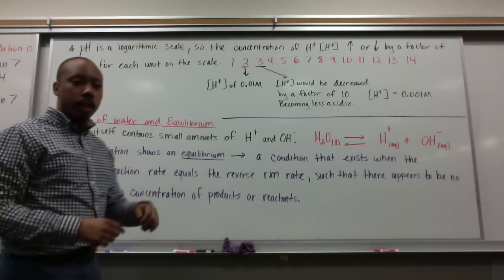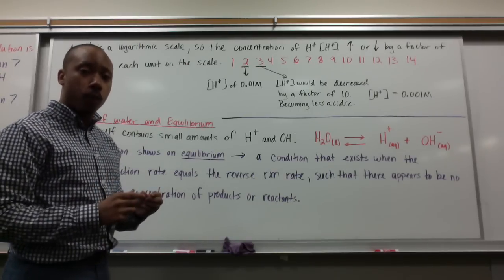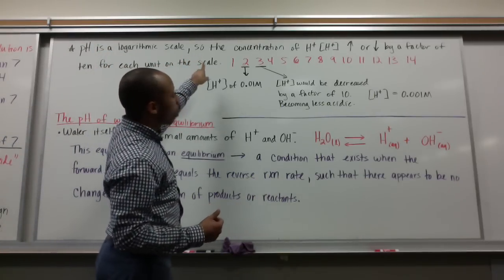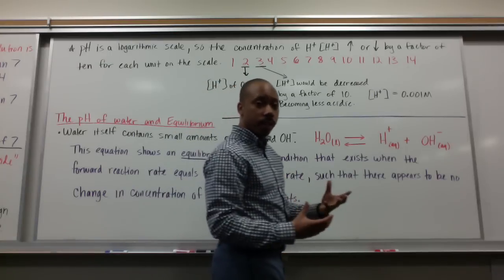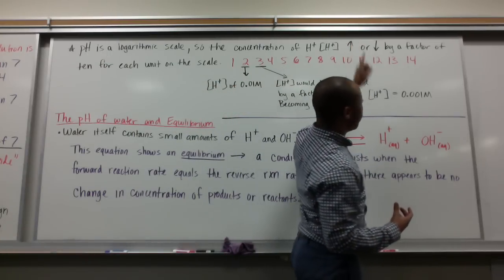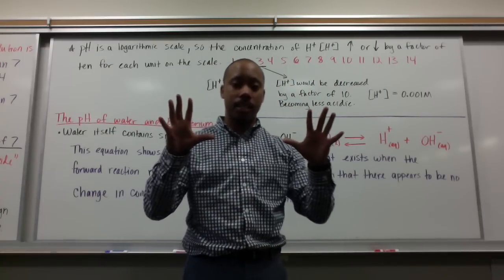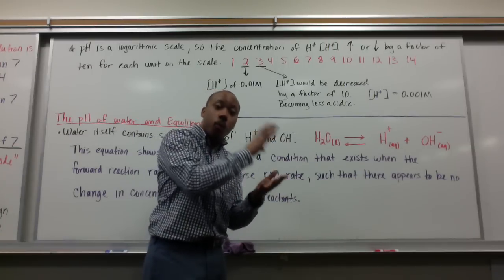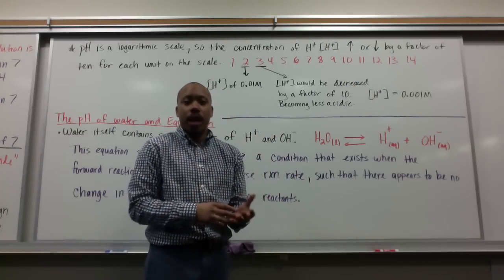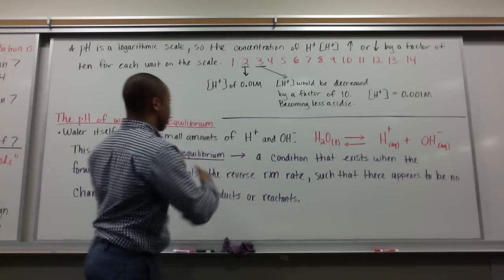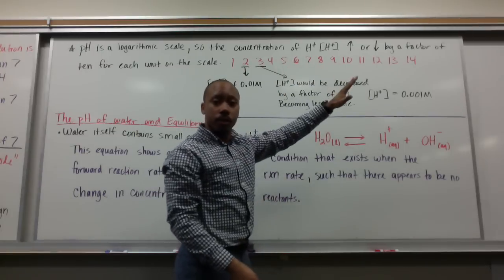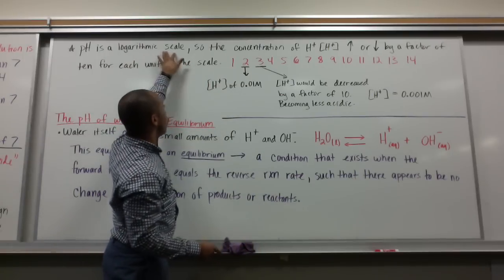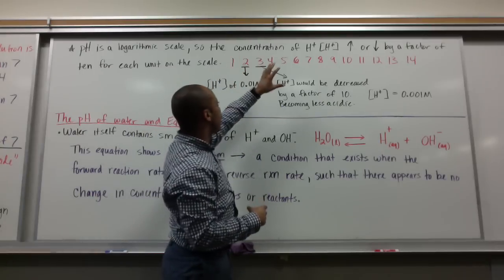The pH scale is a logarithmic scale. The concentration of H plus increases or decreases by a factor of 10. Because concentrations can be very small, like 0.000000001 molar, scientists created a scale with simple numbers, 1 to 14, that really represent a logarithmic scale by factors of 10.